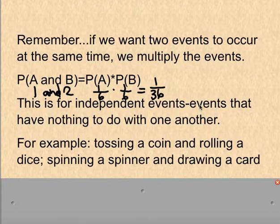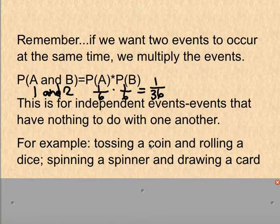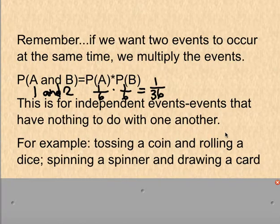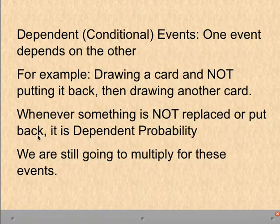Independent events are events that have nothing to do with each other. This includes things like tossing a coin and rolling a die, or spinning a spinner and drawing a card. It doesn't matter what comes before it — regardless of getting heads or tails, you can still roll 1 through 6 on the die.